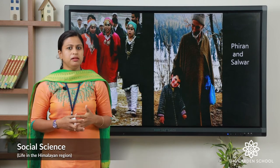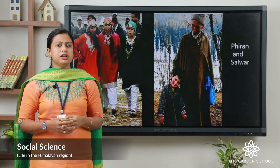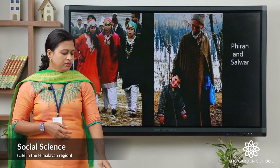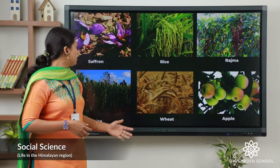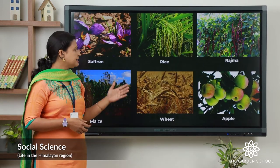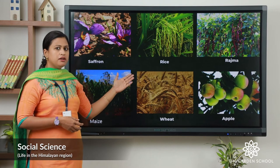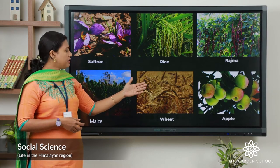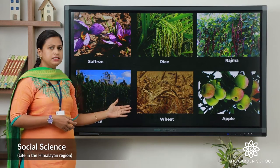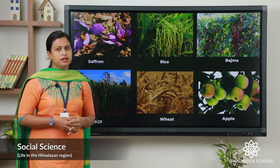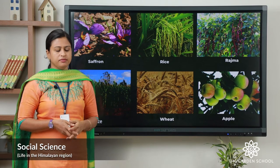The people living in Jammu and Kashmir grow different crops like saffron, rice, rajma, maize, wheat, apple and so on.